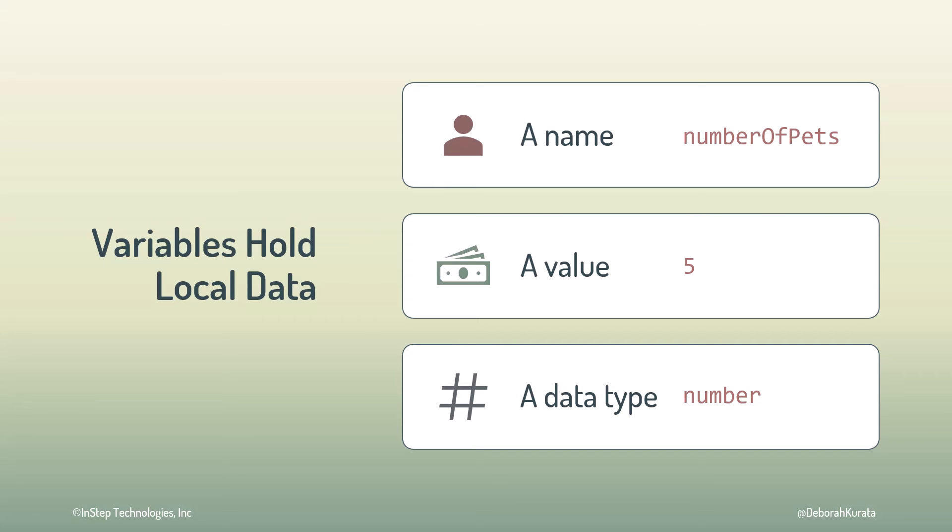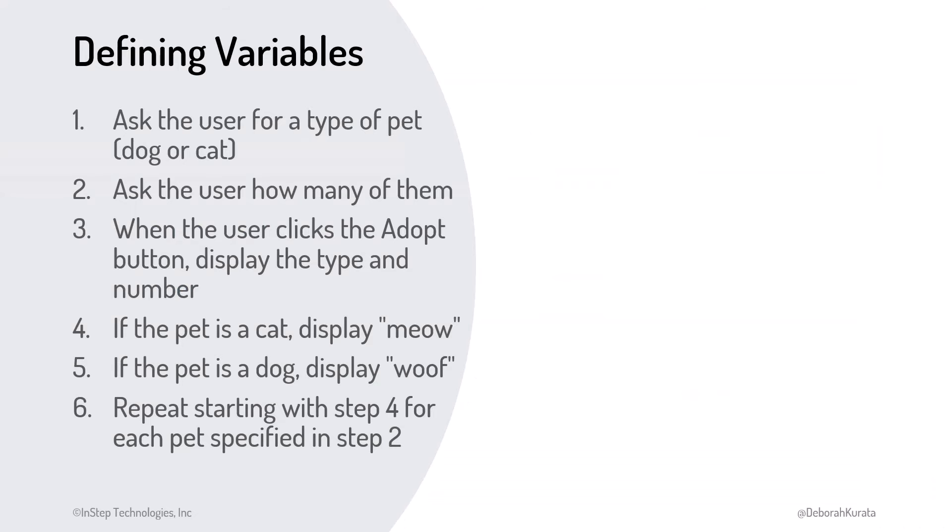Looking again at the instructions for our first iteration of our pet cafe, we would define variables, such as typeOfPet, to hold the user-entered value. numberOfPets, to hold that user-entered value. Message, to hold the message the computer displays to the user. And greeting, for the pet's greeting.